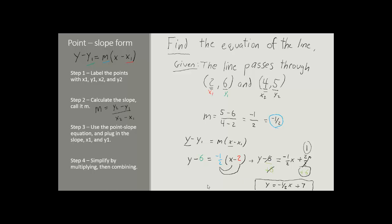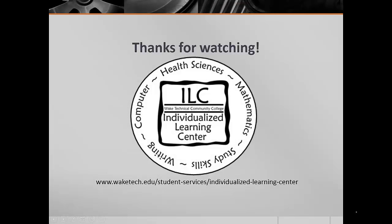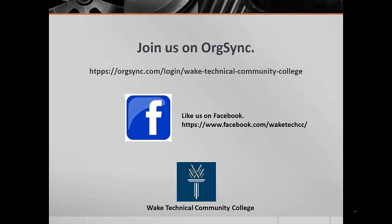This version of the equation is often referred to as slope-intercept form. We'll hear quite a bit more about this in the next learning objective. But for now, this problem is finished. Our answer is y equals negative 1 half x plus 7. Thank you all for watching. We'll see you next episode.